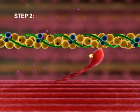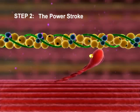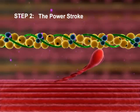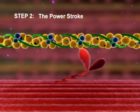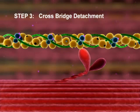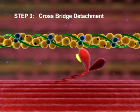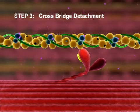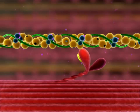Step 2: The Power Stroke. ADP is released and the activated myosin head pivots, sliding the thin myofilament toward the center of the sarcomere. Step 3: Crossbridge Detachment. When another ATP binds to the myosin head, the link between the myosin head and actin weakens, and the myosin head detaches.